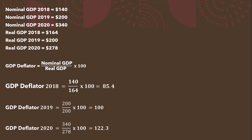And finally, in 2020, we take the nominal GDP in 2020 and divide it by the real GDP in 2020, all multiplied by 100, and we get a GDP deflator of 122.3. That's it — I hope you found this video helpful.